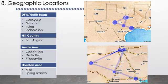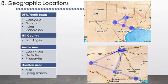The geographic locations I looked at included the DFW and North Texas area — the cities of Colleyville, Garland, Irving, and Richardson. I also looked at San Angelo, which is in the hill country around central Texas. I also looked at the Austin area, including some smaller suburbs such as Cedar Park, DeVale, and Pflugerville — these were actually so small they almost don't show up on the map. And I also looked outside the Houston area at some suburbs of that area, including Alief and Spring Branch.